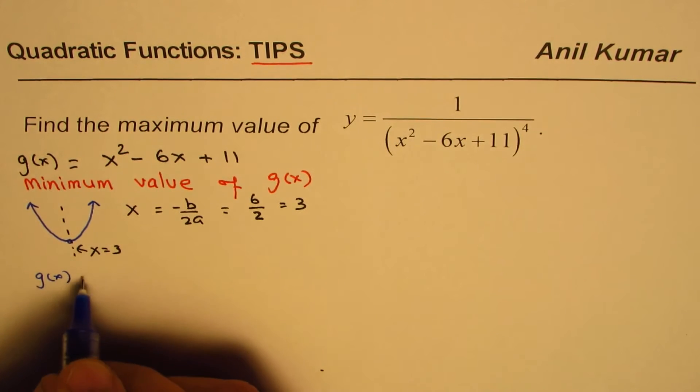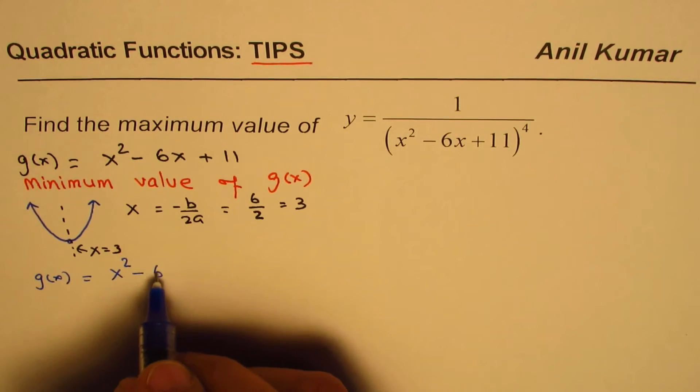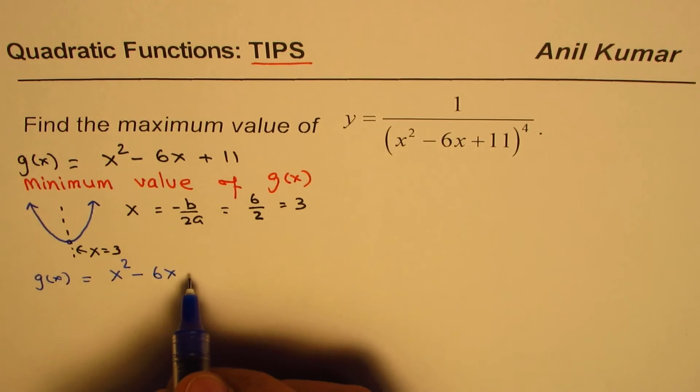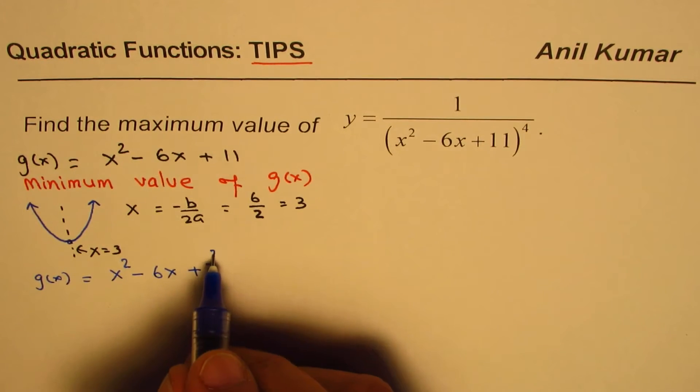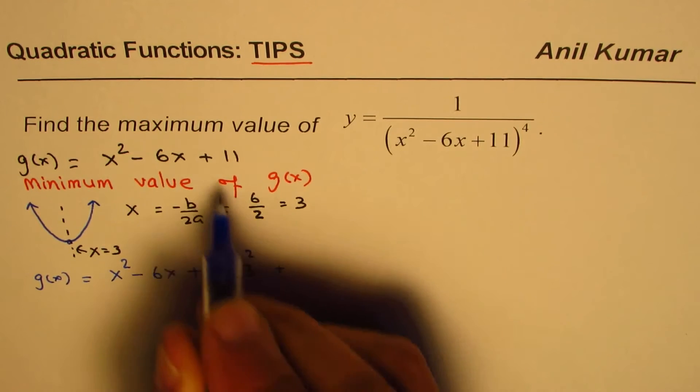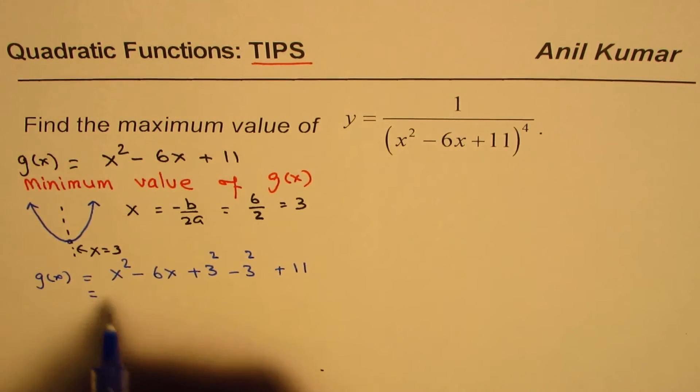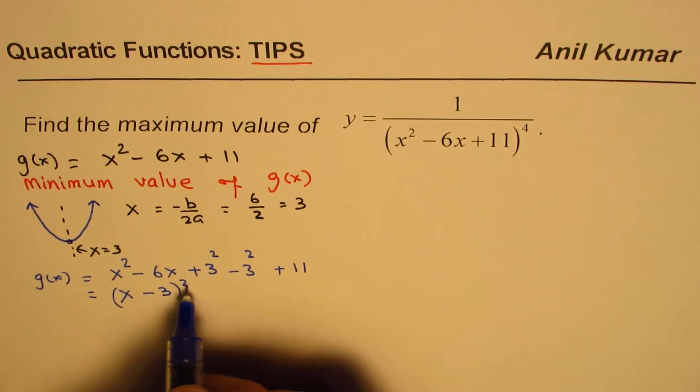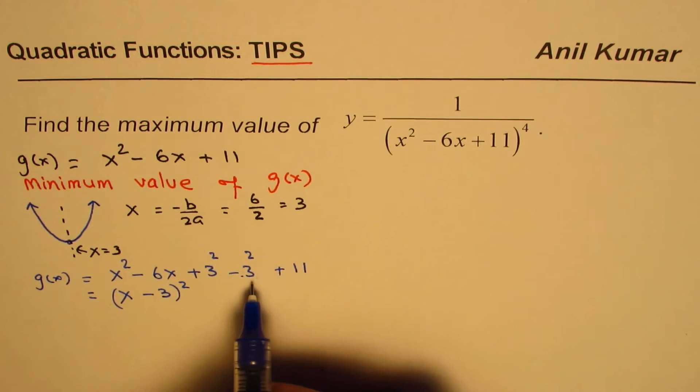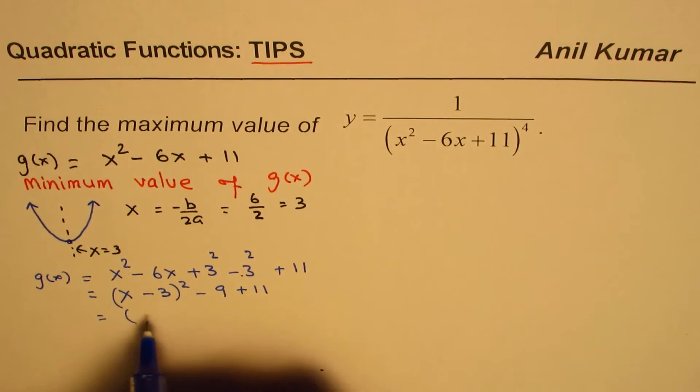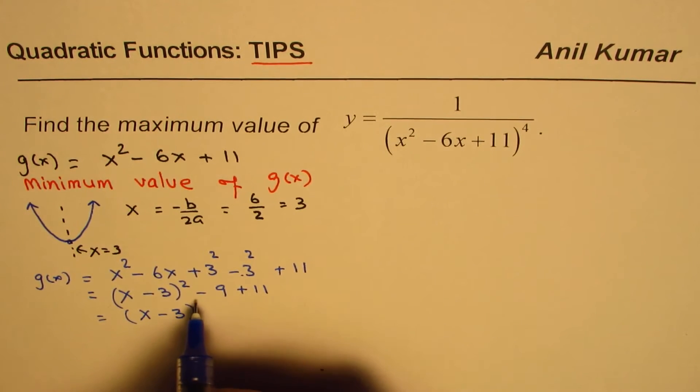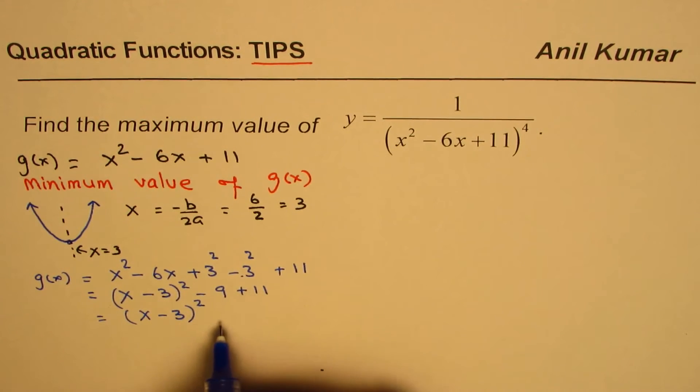So, we will write g of x as x squared minus 6x, half of 6 is 3. So, we will write this as plus 3 squared minus 3 squared and then we keep 11 as such. And that gives you x minus 3 whole square. And we will combine these two, minus 9 plus 11. So, let me write minus 9 plus 11 first. And then we will write this as x minus 3 whole square minus 9 plus 11 is plus 2.